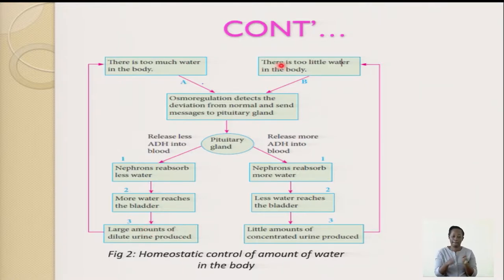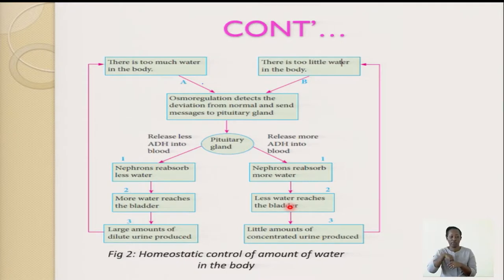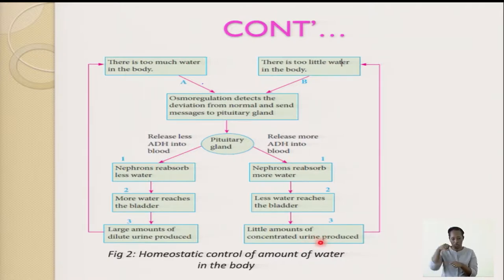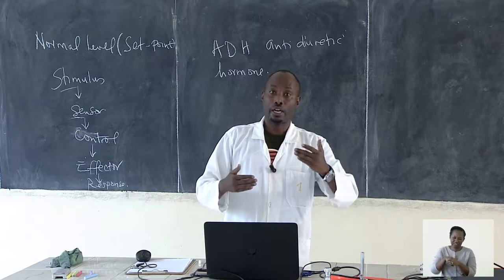When there is too little water in the body, the pituitary gland releases ADH. The nephron — the basic functional unit of the kidney — performs reabsorption of water. Once it reabsorbs water, the urine will have less water and will be a small amount of concentrated urine. For example, during the dry season when it is very hot, you urinate urine that is more yellowish because there is less water, as you lose water through sweating.